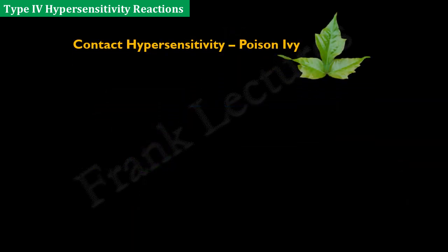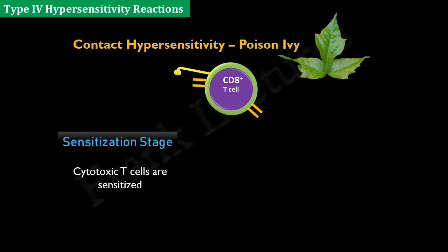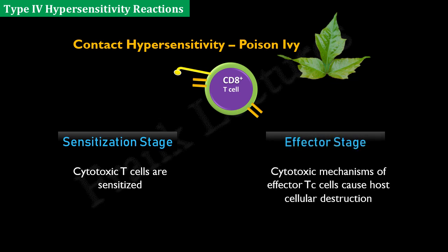Contact hypersensitivity caused by poison ivy involves CD8-positive T-cells. These cytotoxic T-cells are sensitized during primary contact with the antigen, and on secondary contact, activated cytotoxic T-cells use their cytotoxic mechanisms to damage the skin cells and cause local inflammation. Since the majority of type 4 hypersensitivity reactions involve CD4-positive helper type 1 cells, we will discuss the mechanism of such reactions in detail.